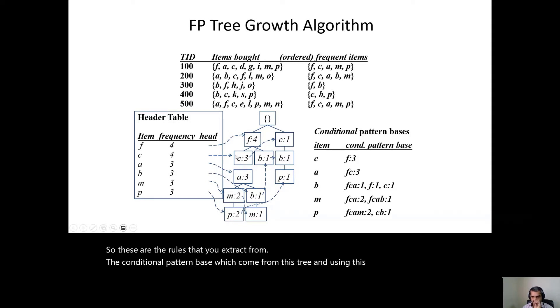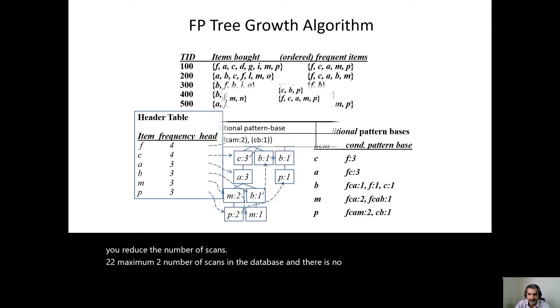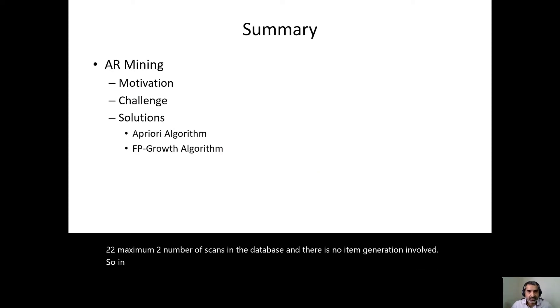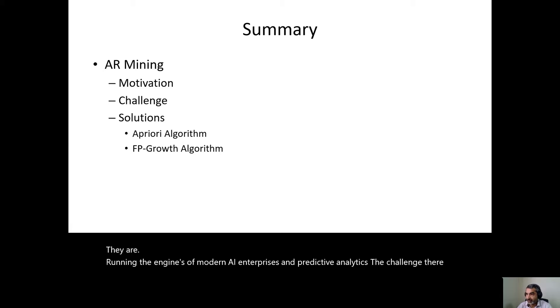And using this interesting algorithm, you reduce the number of scans to two, maximum two number of scans in the database. And there is no item generation involved. So in this session, we learned association rule mining, the concept and applications, and how they are running the engines of modern AI enterprises and predictive analytics. The challenge there is generating a large number of item sets and then checking the support and confidence of the rules.